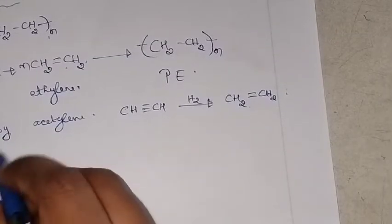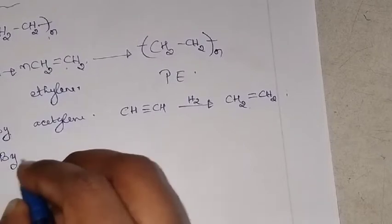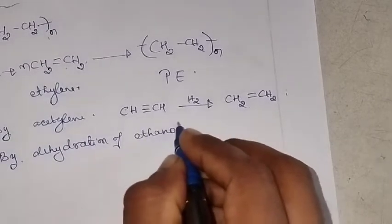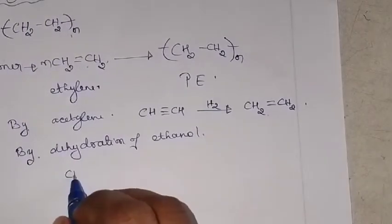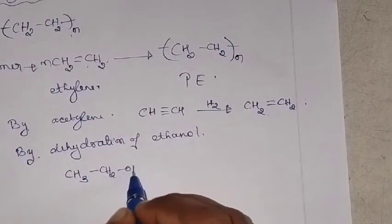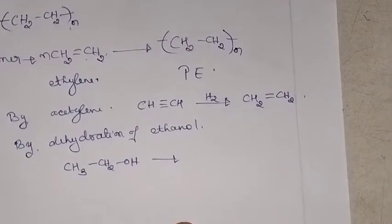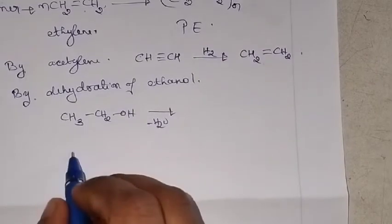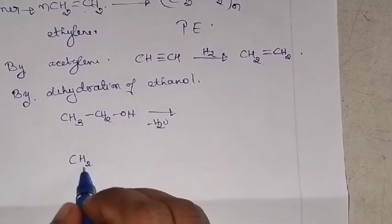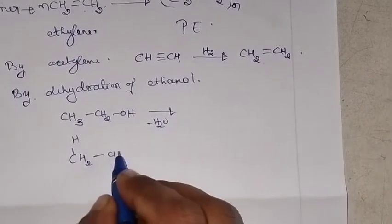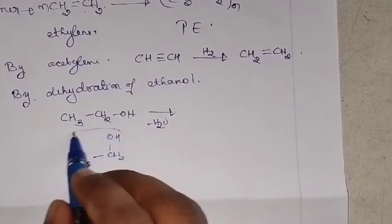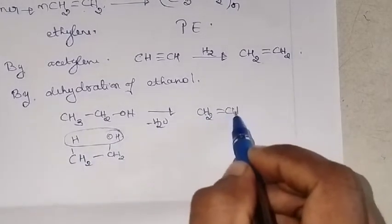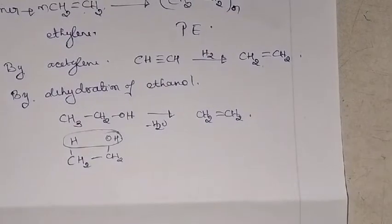The second method is by dehydration of ethanol. If you have ethanol, CH₃CH₂OH, what happens is that there will be an elimination of water — that is what dehydration means. The water molecule eliminates, so that you will get CH₂=CH₂. This is the second method to get your starting material.